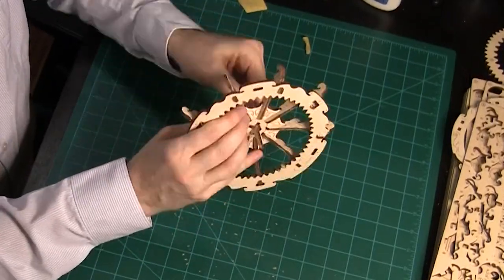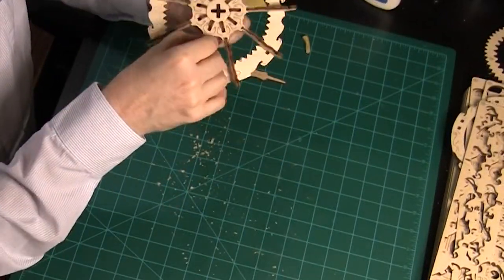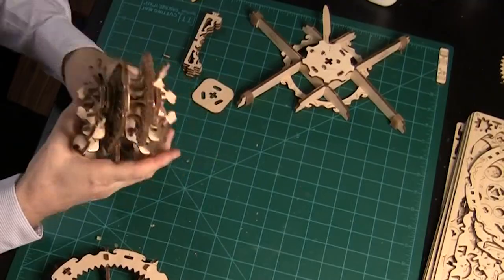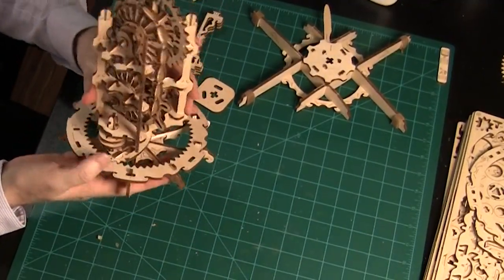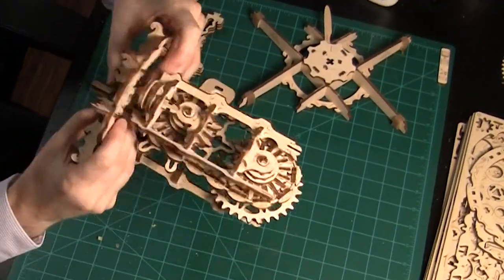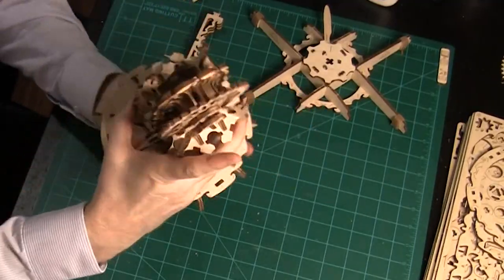Make sure the circle in the middle turns freely after the legs have been added. Now, to add the base piece to the large assembly. After the base is on, add the small circular piece.